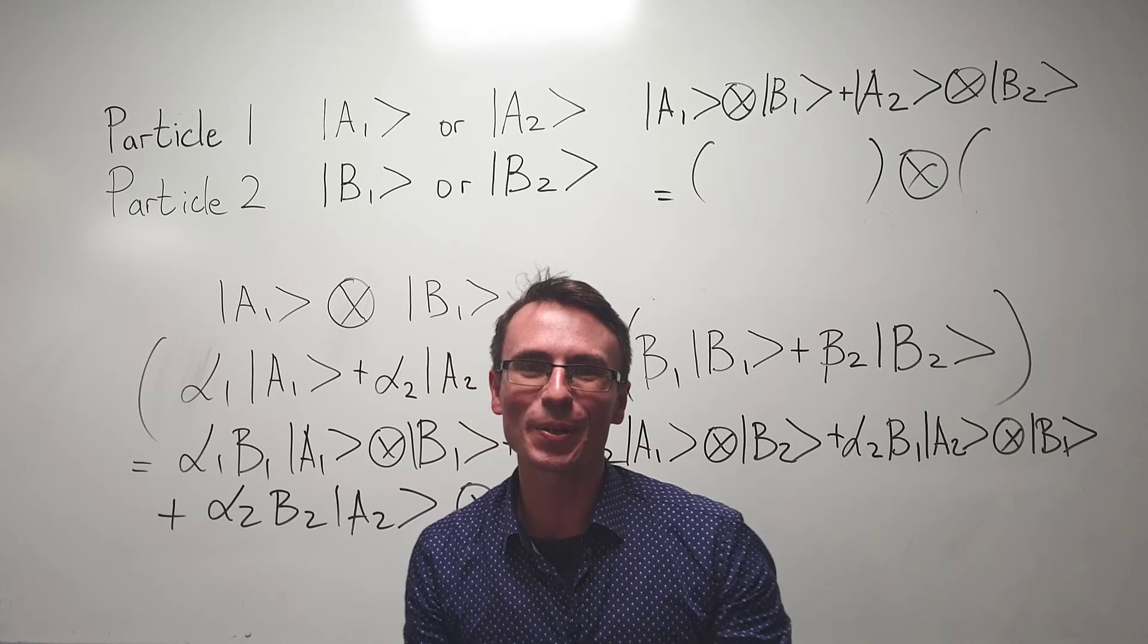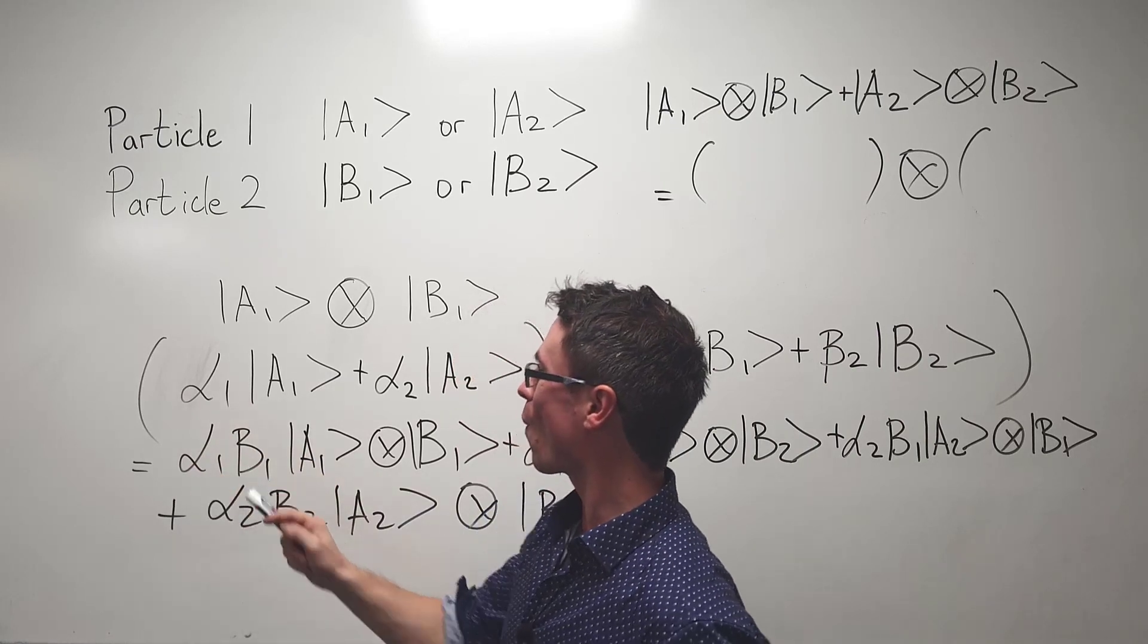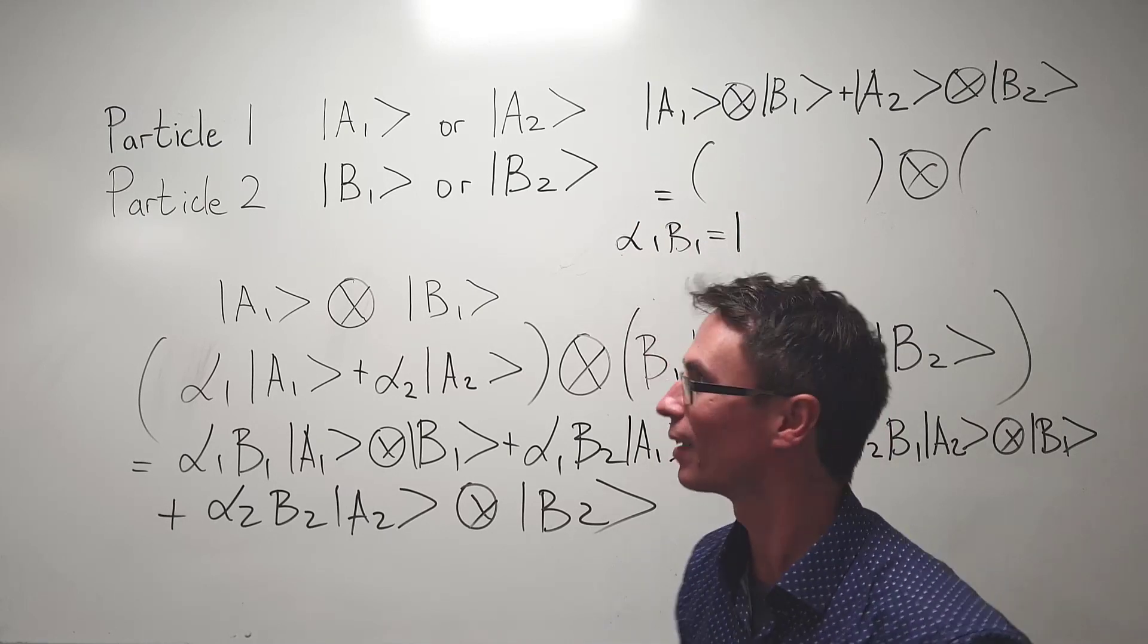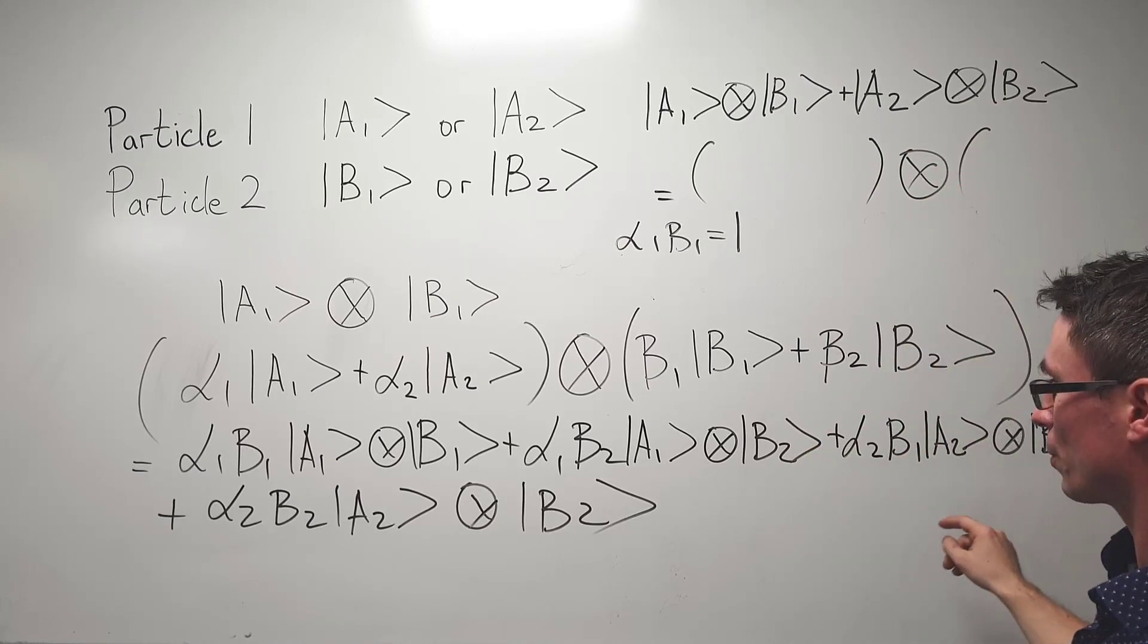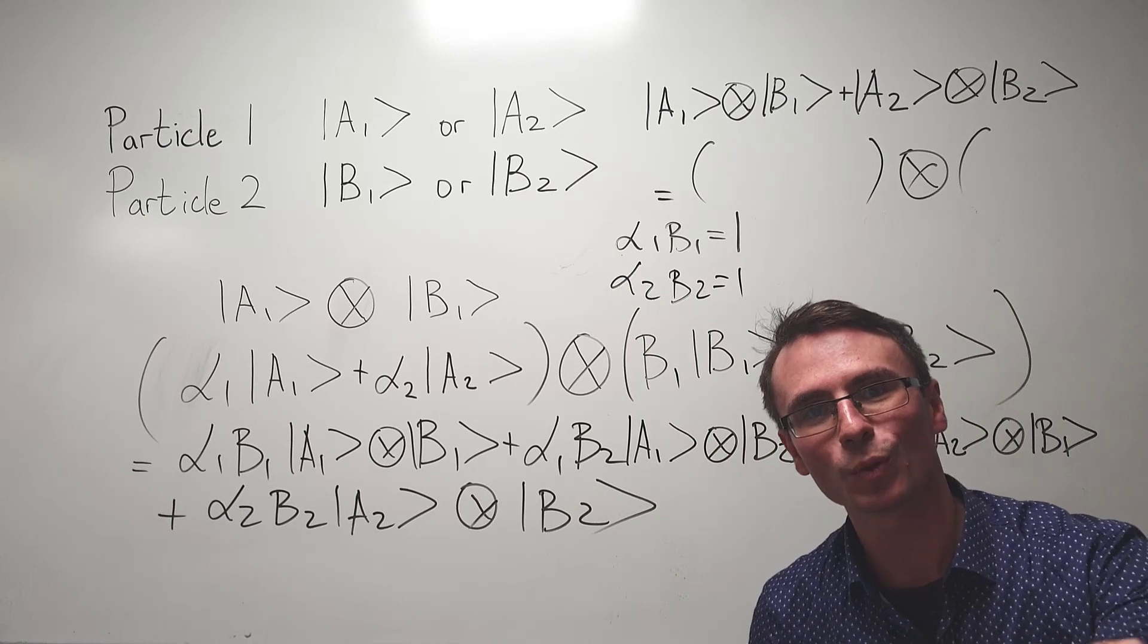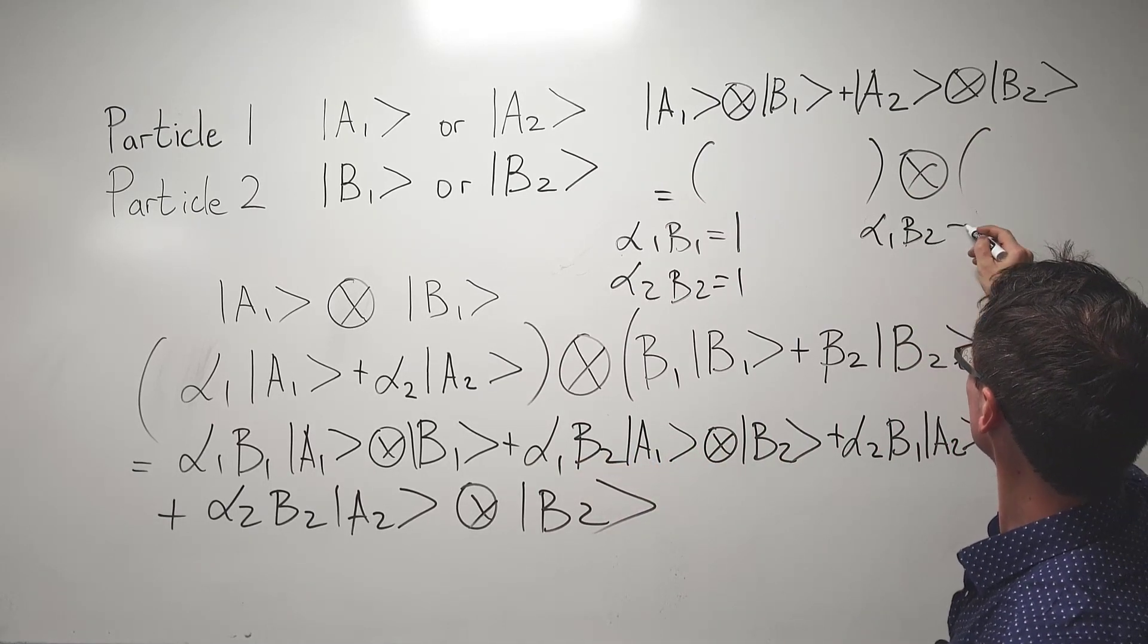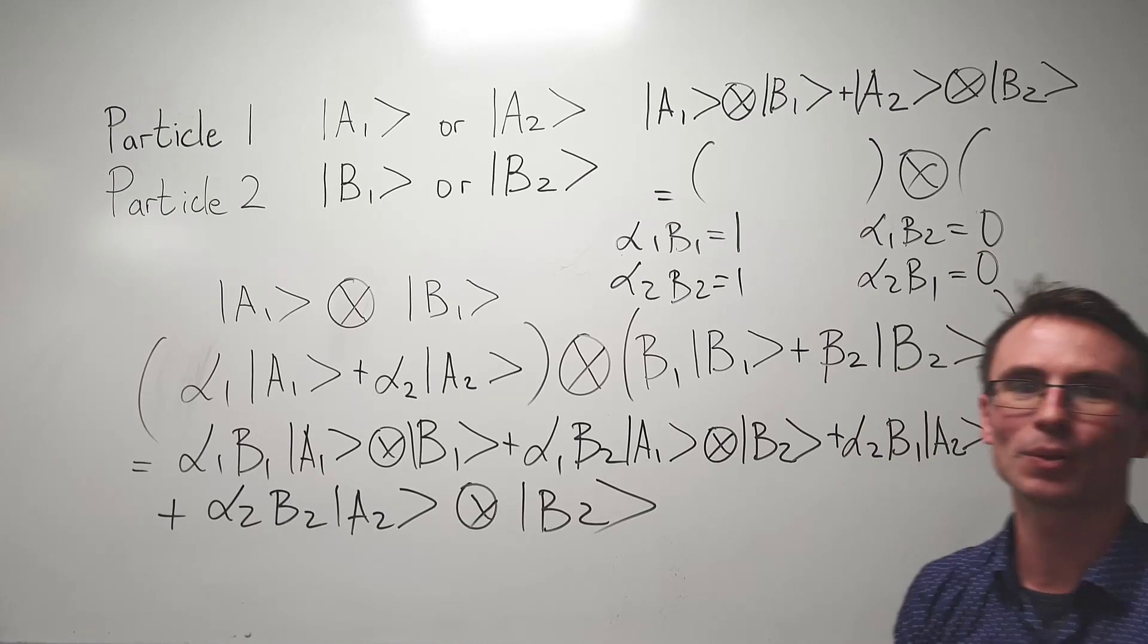Let's think about this in terms of coefficients. If this is true then this means that those two coefficients alpha one and beta one will have to equal to one, so alpha one times beta one equals one. And if this term here is true then alpha two times beta two will also equal to one. Those two coefficients alpha one beta two will have to equal to zero, and this state here alpha two beta one will also have to equal to zero.